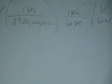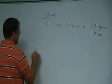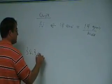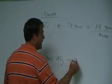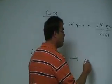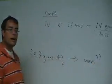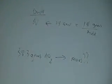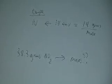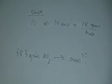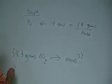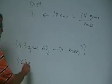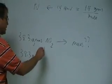Okay, so here's what I want to do. If I had 38.3 grams of something called nitrogen dioxide, how many moles of nitrogen dioxide would I have? So if I had 38.3 grams of nitrogen dioxide, how many moles would I have? Well, 38.3 grams.